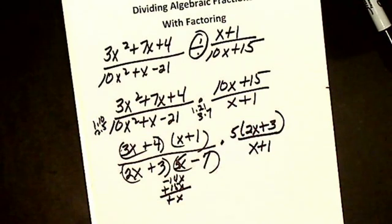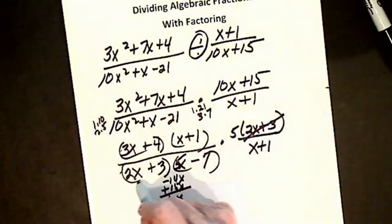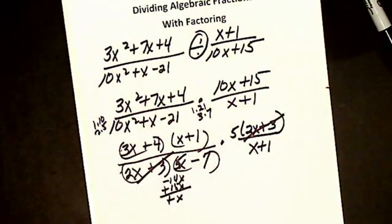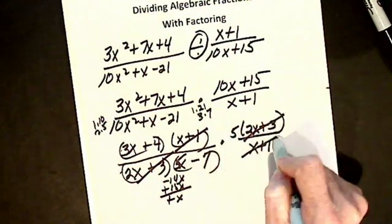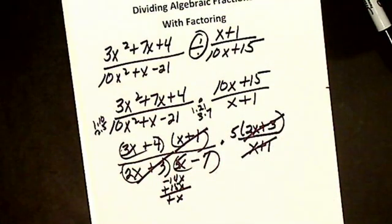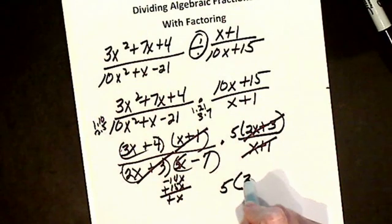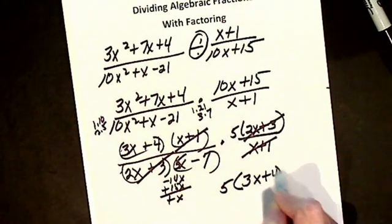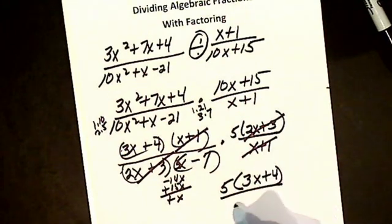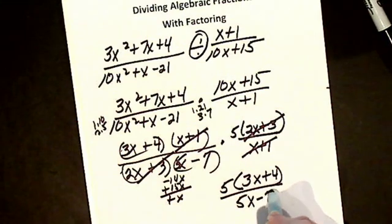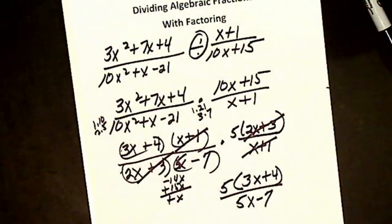So now, let's see what could be done. I got my 2x plus 3. My 2x plus 3 cancels to 1. My x plus 1, my x plus 1. Looks like everything else has to stay. So we usually write the coefficient first. So I'm left with 5 times 3x plus 4 divided by 5x minus 7. And I usually leave my answer in factored form.